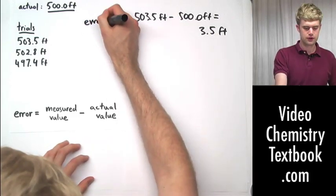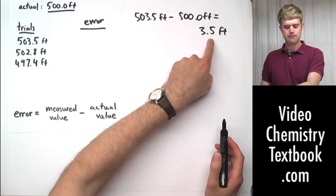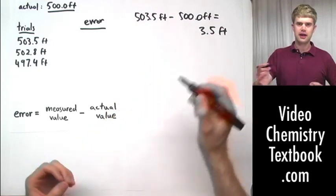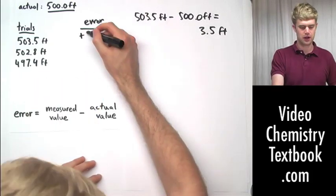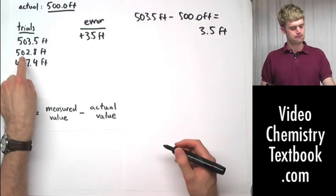So for each one of these trials we can indicate an error. This was 3.5 higher than the actual value. So we often indicate whether we were a little bit above or a little bit below by using a plus or minus sign. So this error is going to be plus 3.5 feet for this measurement.